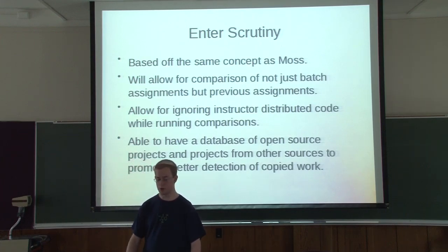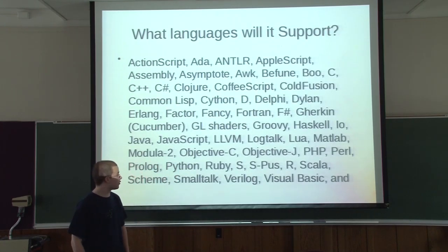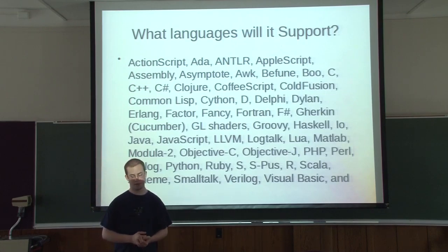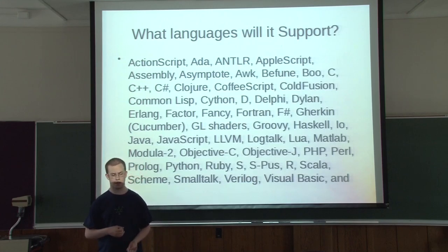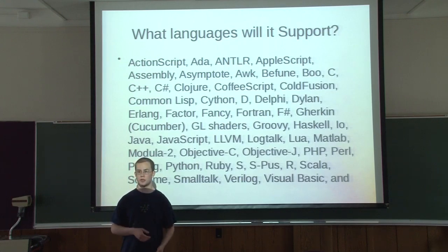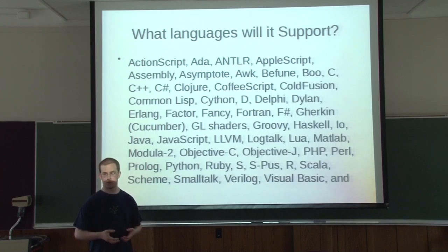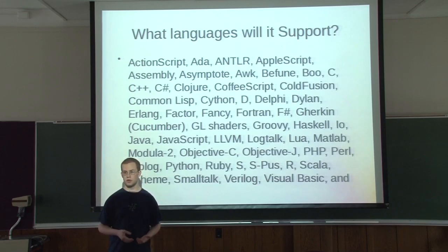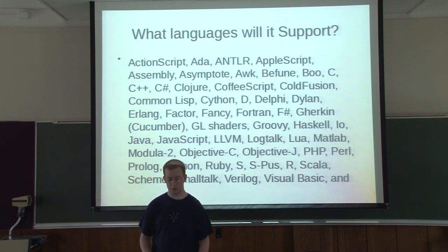And what languages will it support? A lot. In fact, this is only a small portion of what it will support because I can only get this much onto a slide. It's based off a Python library called Pygments, which has support for many, many languages, along with markup languages and Debian config files. In addition, it has the ability — if you want support for, say, a language you're developing — to go ahead, write a lexer, submit it, and they'll incorporate it into the project. It actually gives you a sort of recourse if the program doesn't have the language you particularly want. With the other two, if it doesn't support your language, you're out of luck. With this, you at least have some sort of solution to get it to work.